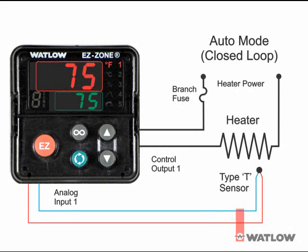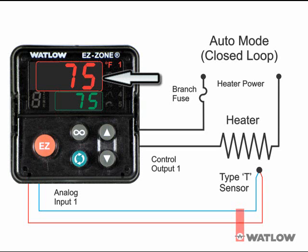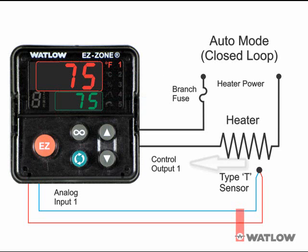In auto mode, the controller monitors the sensor input to determine if closed-loop control is possible. In this diagram, a type T thermocouple monitors the temperature of a heater. The controller checks to make certain a functioning sensor is providing a valid input signal. Assuming the user requested auto mode and a valid analog signal is present, the controller will perform closed-loop control. Closed-loop control uses the process sensor to determine the difference between the process value, shown here in red on the upper display, and the closed-loop setpoint, shown here in green on the lower display. The controller applies or removes power to a control output to reduce the difference.